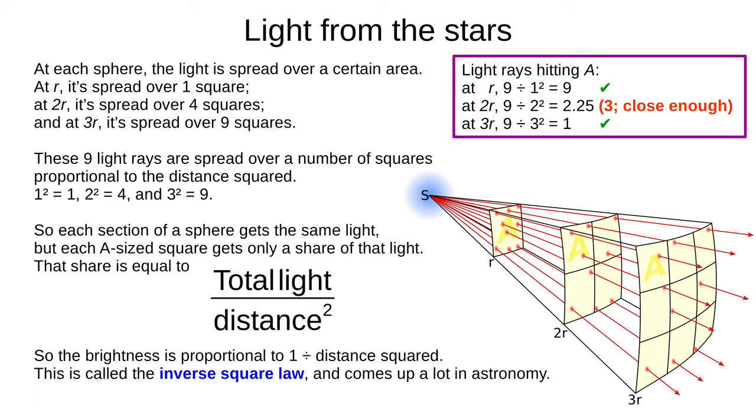At each section of a sphere, the same amount of light is spread over an ever-increasing area. At R, the light covers one square. At 2R, four squares, and at 3R, nine squares. The number of squares is proportional to the distance squared. One squared equals one, two squared equals four, and three squared equals nine. So while each section of the spheres gets the same light, each A-sized square within that section gets only a share of that light, equal to the total light divided by the distance squared. The apparent brightness of the source is proportional to one divided by the distance squared. This is called the inverse square law. This comes up a lot in astronomy. You may remember it from Newton's law of gravitation, from my video of the heliocentric model.